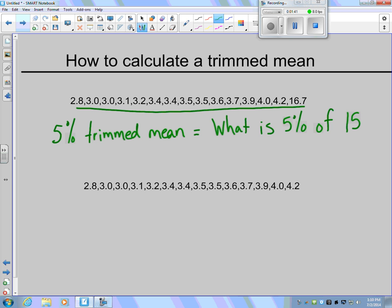What is 5% of 15? To do that, we need to convert our percent to a decimal. Percent means out of 100, so that's 5 divided by 100, giving us 0.05 or five hundredths, times 15, which gives us 0.75 or seventy-five hundredths.